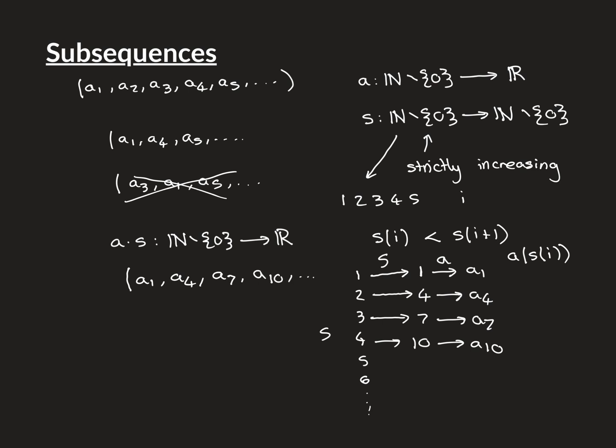So you can see how this formalisation works: we have the subsequence function S mapping natural numbers onto natural numbers, and it needs to be strictly increasing. This captures the idea of selecting terms in an ascending way to include in our subsequence. The collection of all functions satisfying this strictly increasing property represents all the different ways you could take a subsequence of a general sequence A.